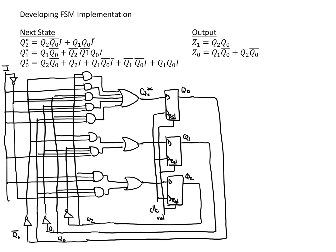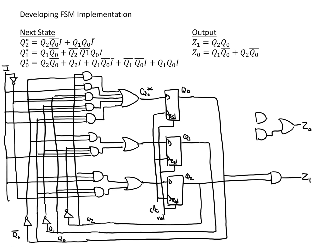Now we need to do the logic for the outputs. We have two outputs. For Z1, we need Q2 and Q0, which gives us Z1. For Z0, we need two terms: Q1 and Q̄0, and also Q2 and Q̄0. That takes care of our logic for Z0, and that completes implementing this state machine.